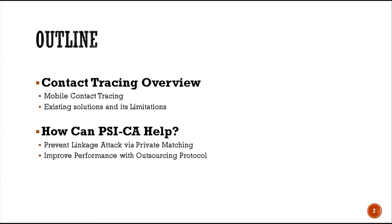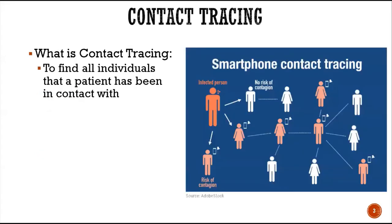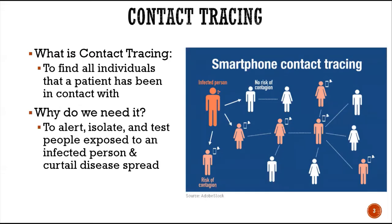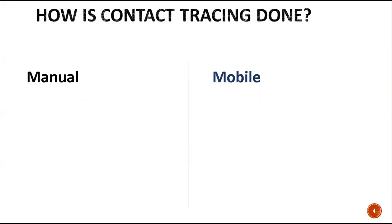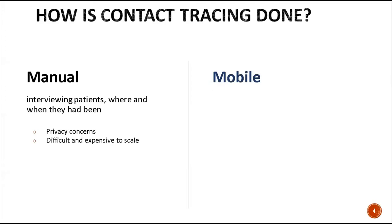Later I will go into more detail on how we can handle privacy concerns and how to improve our contact tracing performance. Contact tracing is to find out all individuals that an infected person has been in contact with, and we want to do it because we would like to stop the disease spread. Contact tracing can be done manually by interviewing patients, so you can know where and when they have been. This solution has privacy concerns and is expensive to scale.